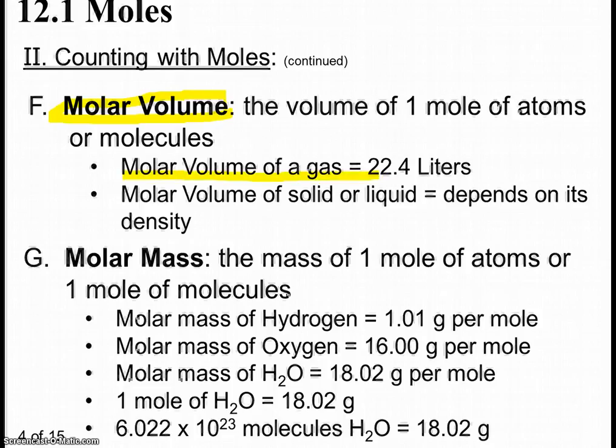The molar volume of a gas is 22.4 liters no matter what type of gas it is. And that's because all gases, as a rule, expand to take the shape and size of their container. The molar volume of a solid or liquid, we can't calculate because it depends on its density. So we will learn to calculate that later on in another unit when we talk about molarity. But we'll just focus on the gas for this chapter.